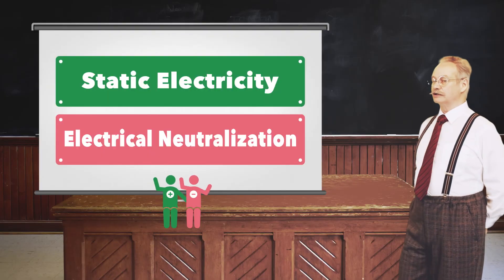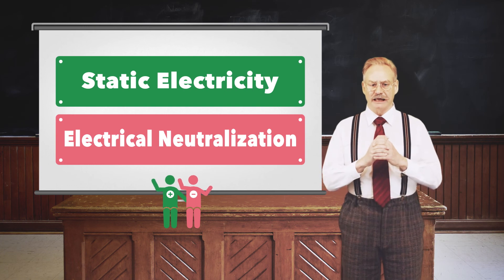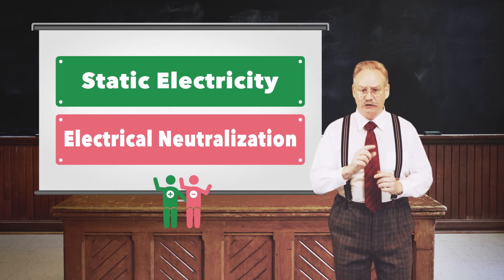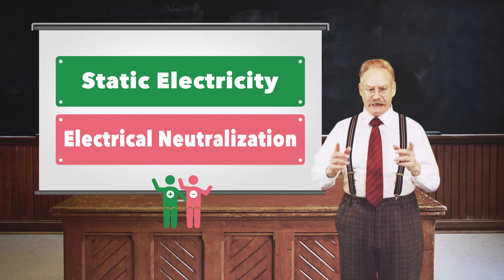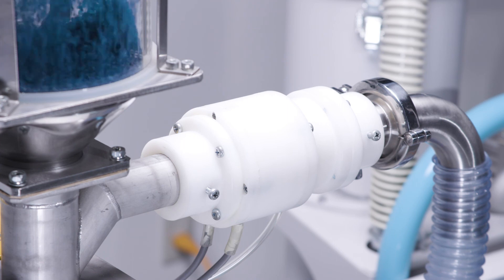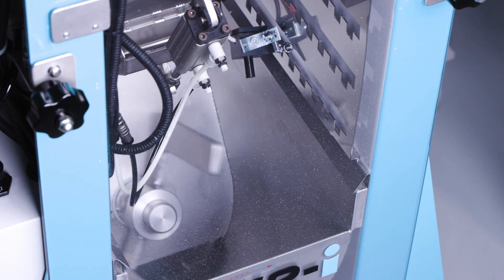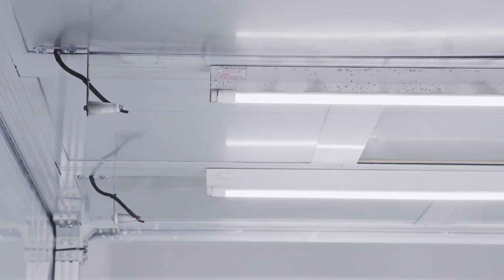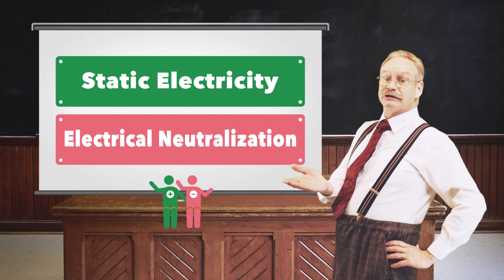To effectively control ESD in plastic molding plants, it is important to select an electrical neutralization unit that is appropriate for your needs and the degree of static electricity. Reducing molding defects will improve productivity and create added value. Ask Matsui about the solutions today.